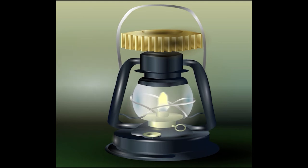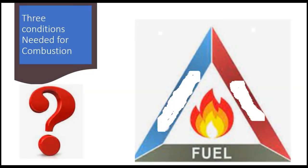The oil lamp produces heat and light energy through the burning of kerosene, a type of fuel. Besides fuel, what are the other conditions that are needed for combustion?